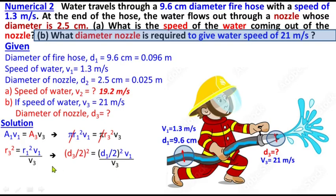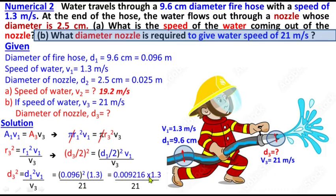Now we substitute values: D₁ is 0.096, V₁ is 1.3, V₃ is 21. Computing: 0.009216 times 1.3 divided by 21 equals 0.000571. This is D₃², so we take the square root.